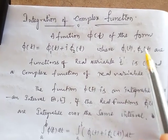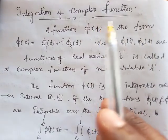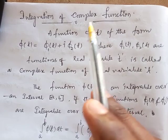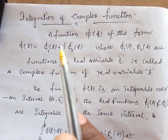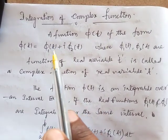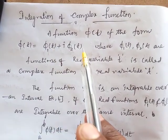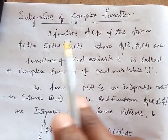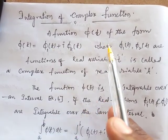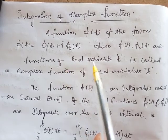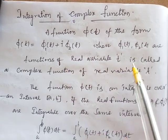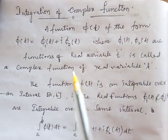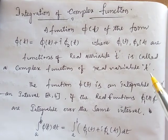Friends, our next lecture is integration of complex functions. A complex function φ(t) is of the form φ(t) = φ₁ + i·φ₂, where φ₁ and φ₂ are functions of real variable t. This is called a complex function of real variable t.